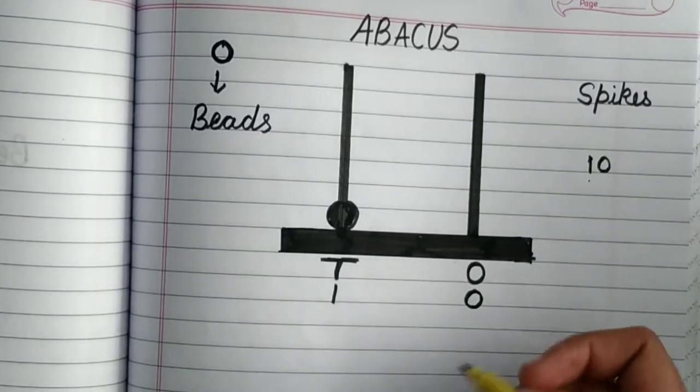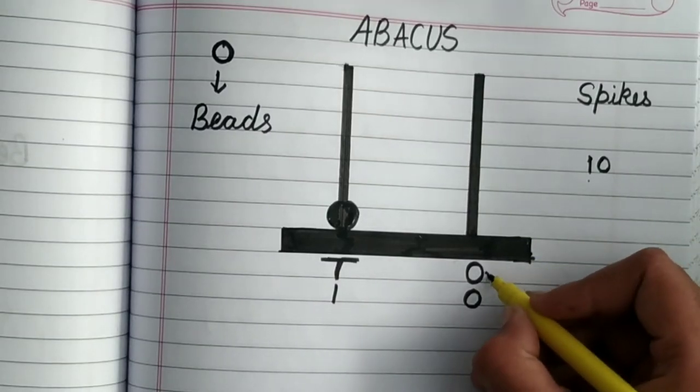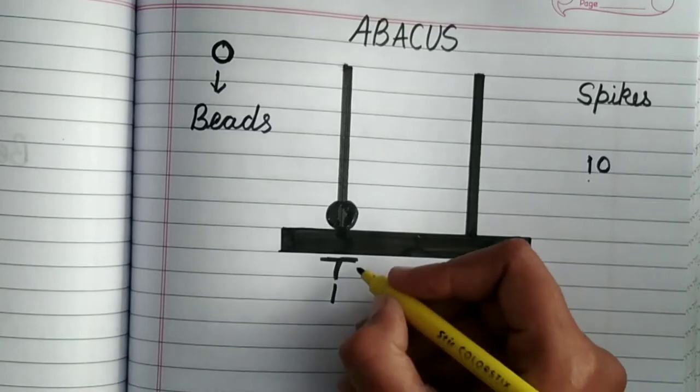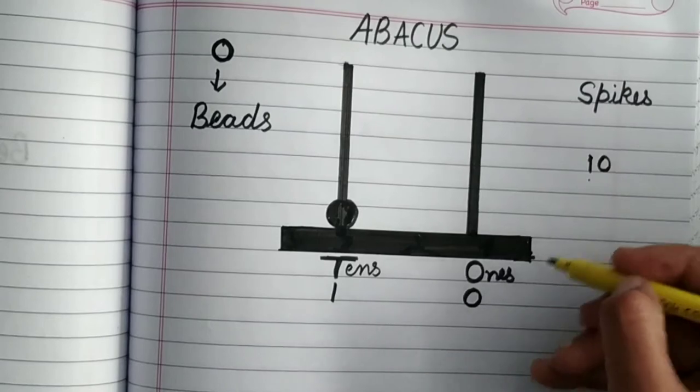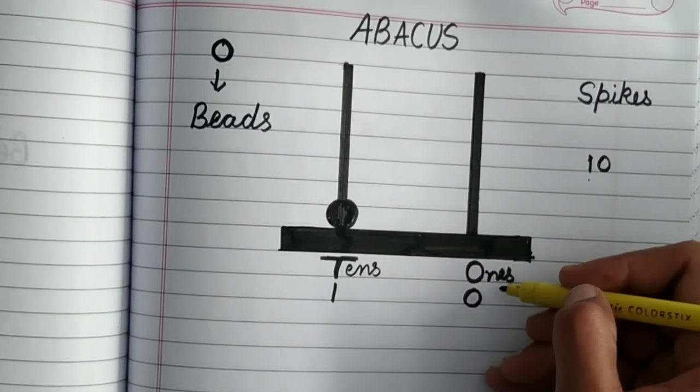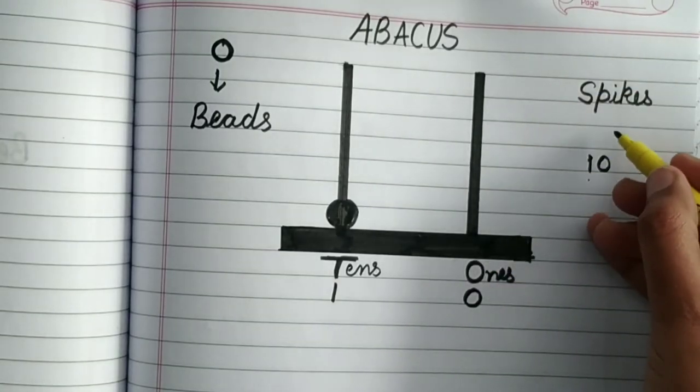I am repeating once again. Below ones, I will write it here once. Here is tens. There is nothing. Zero means nothing. So I have zero under ones. That means I have to draw nothing in this spike.